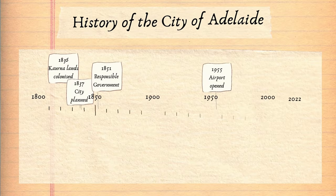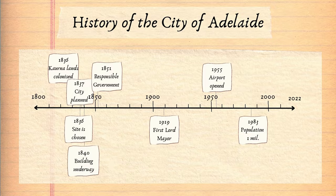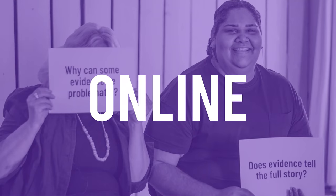Timelines are used to show how things have changed over time. They show us the big picture.